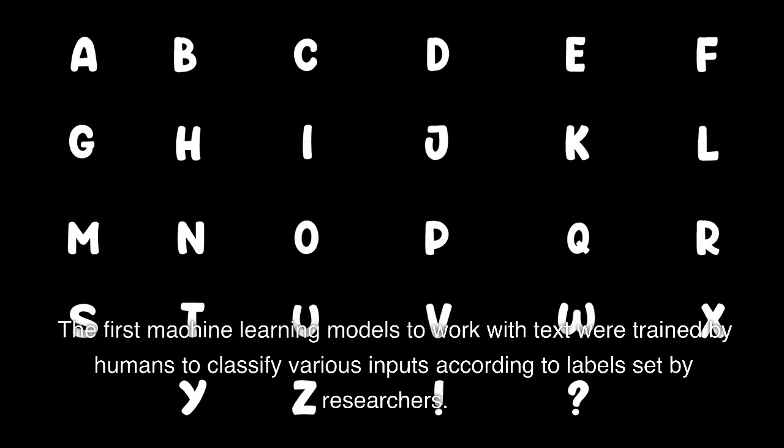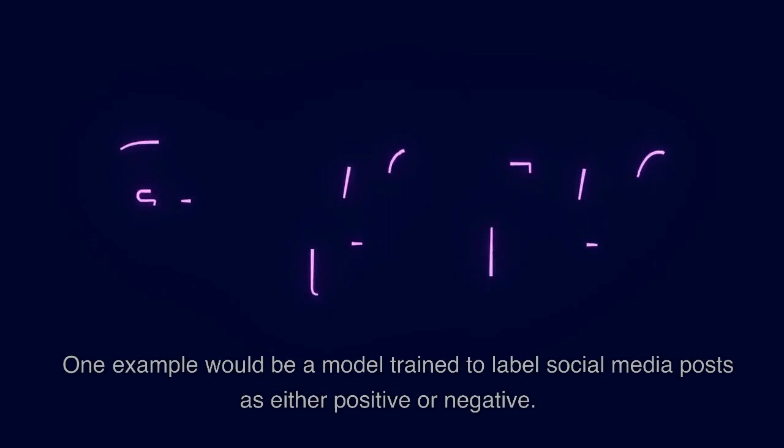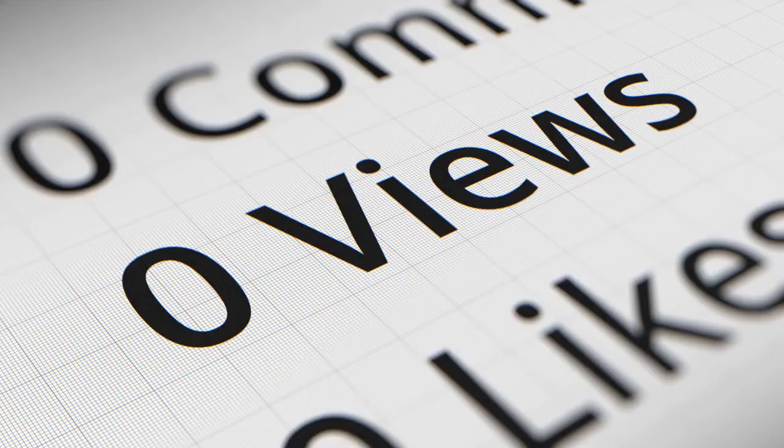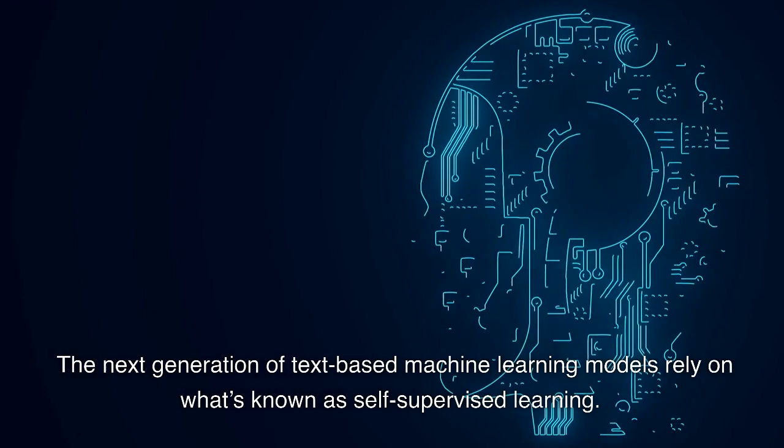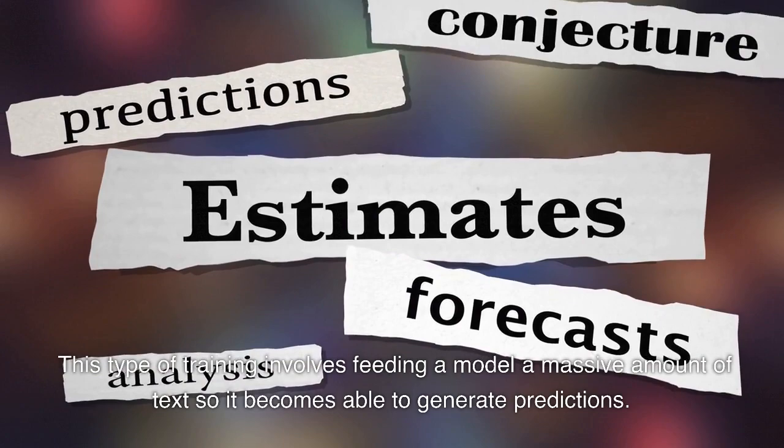The first machine learning models to work with texts were trained by humans to classify various inputs according to labels set by researchers. One example would be a model trained to label social media posts as either positive or negative. This type of training is known as supervised learning, because a human is in charge of teaching the model what to do. The next generation of text-based machine learning models rely on what's known as self-supervised learning. This type of training involves feeding a model a massive amount of text so it becomes able to generate predictions — for example, some models can predict, based on a few words, how a sentence will end.